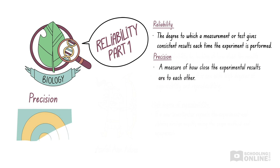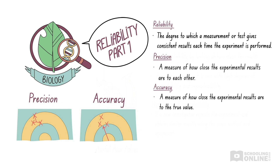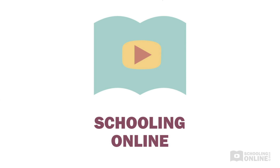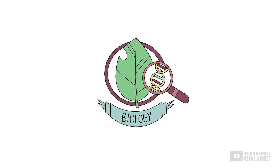Precision is a measure of how close the experimental results are to each other. We hope you enjoyed this Schooling Online production. For more easy lessons on biology, check out our second video on reliability.